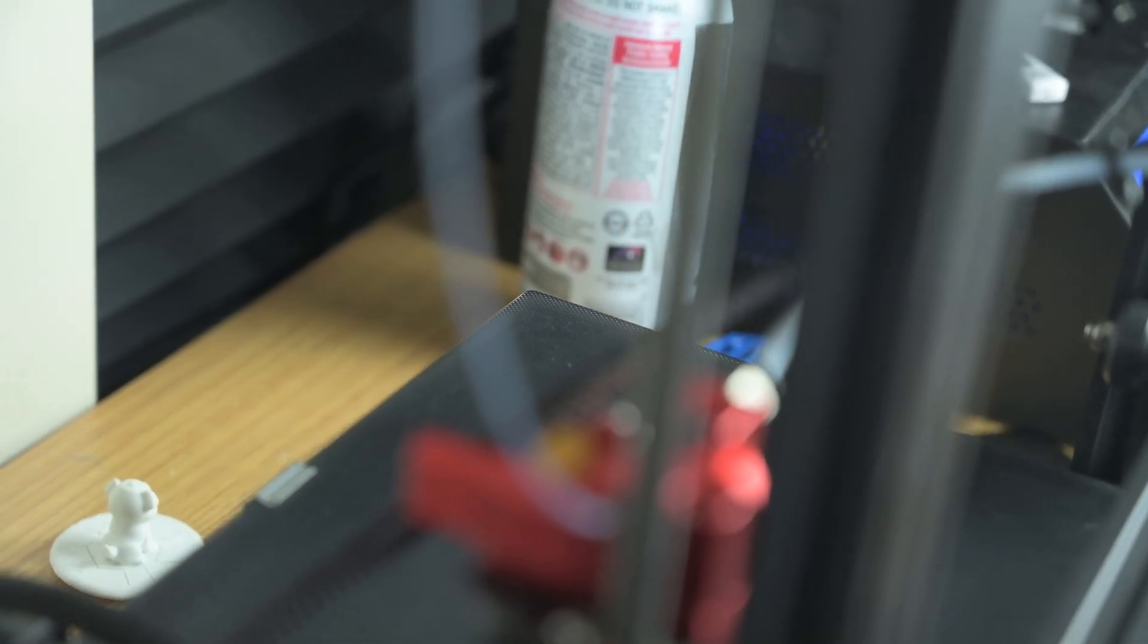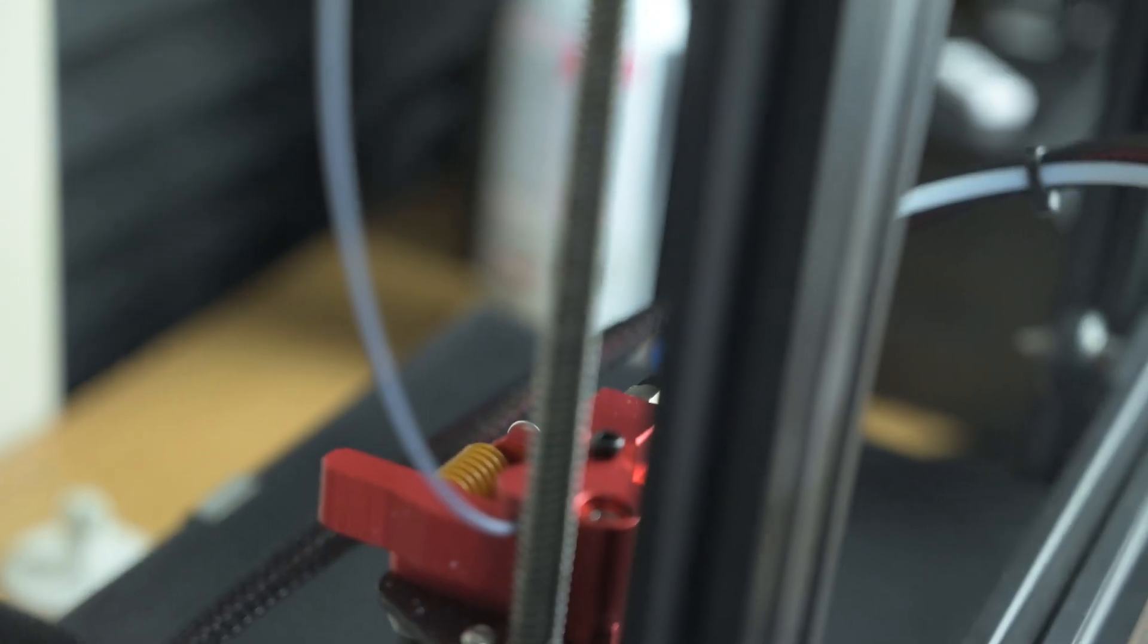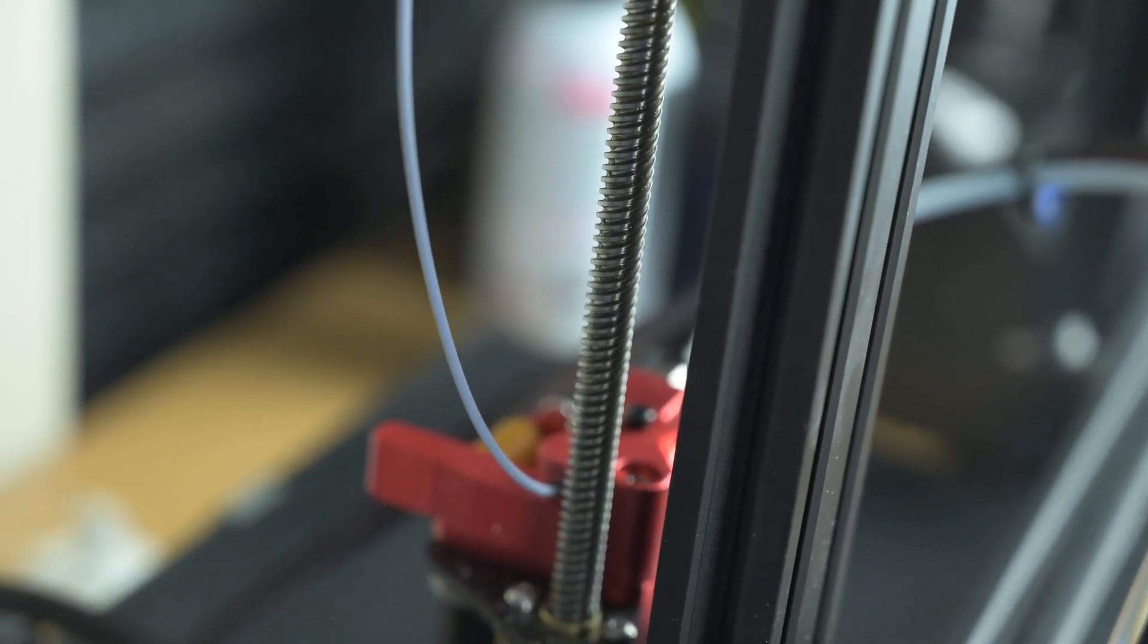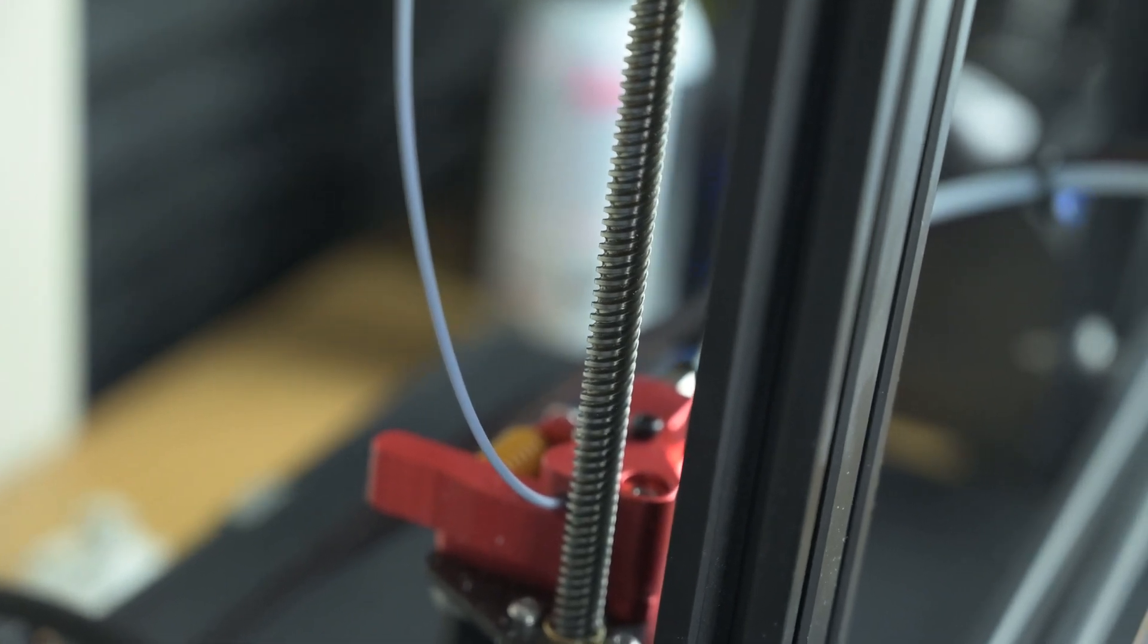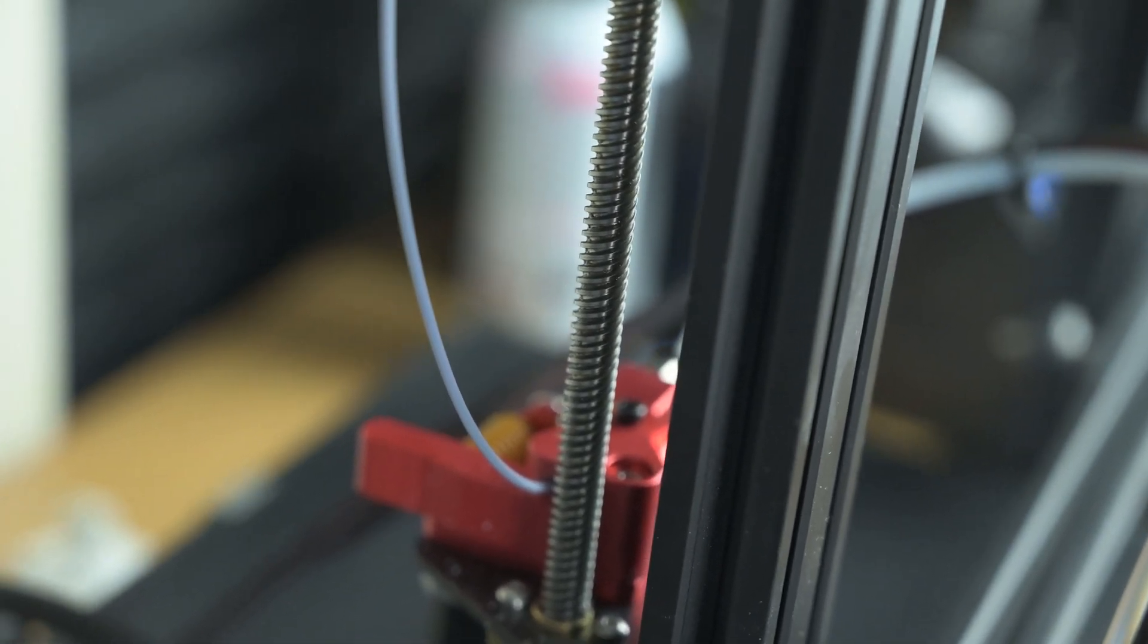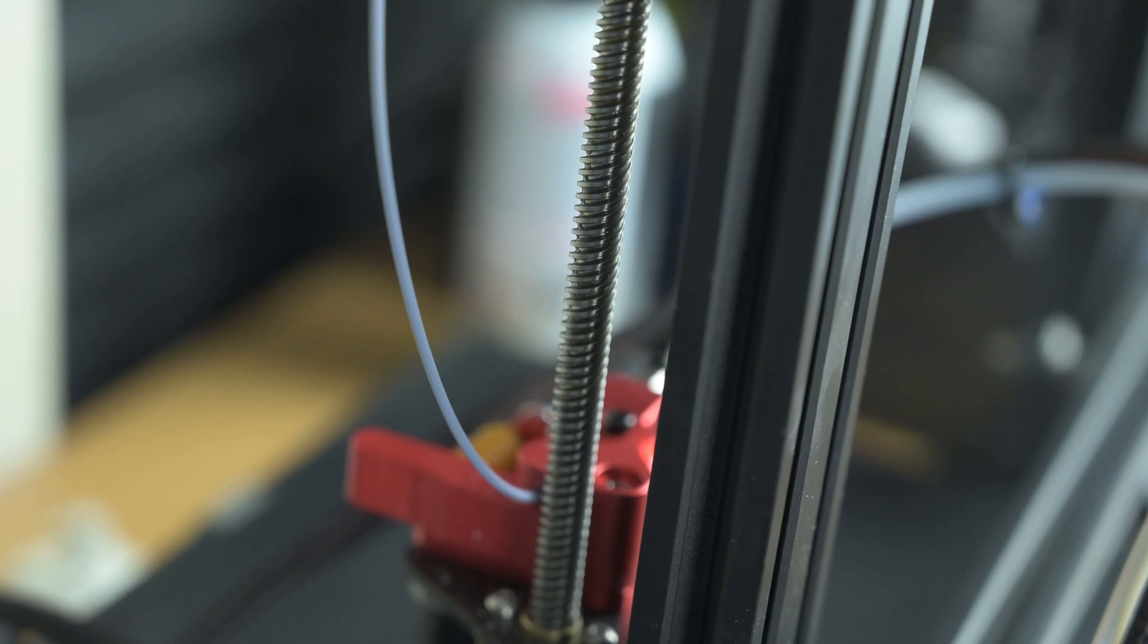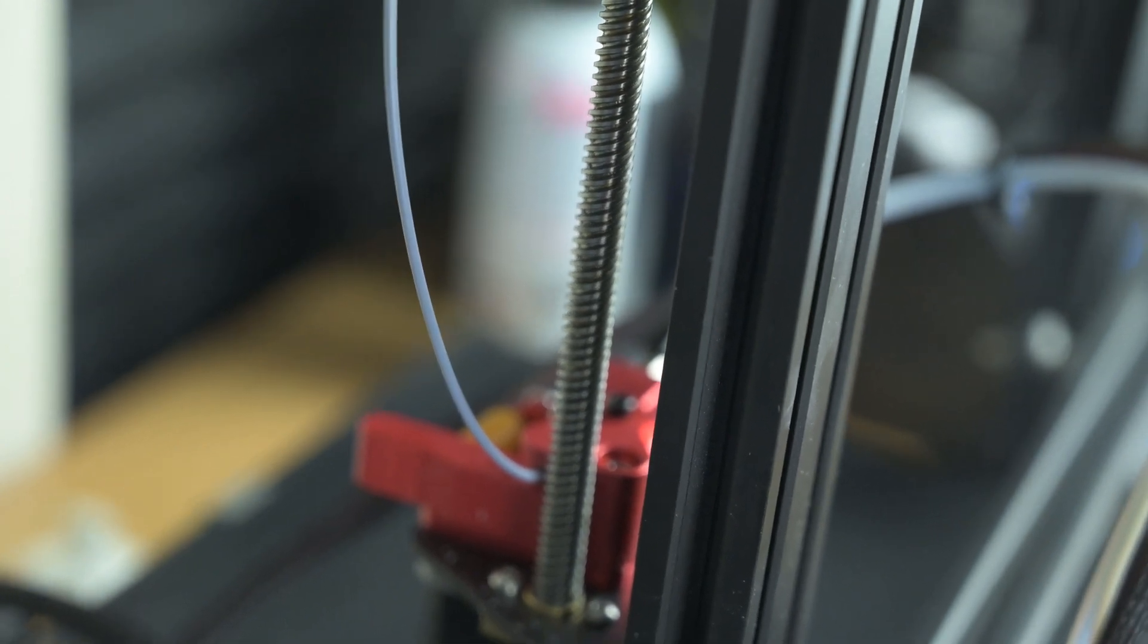All right guys. So hopefully you can see it here. I'm going to try to get in a little bit closer for you guys. It's having a little bit of trouble. Basically here on the Z-Rod, there is a bit of black buildup. I know it's kind of difficult to see because of the lighting, but there's a bit of black buildup. And we're going to go ahead and try to remove that.